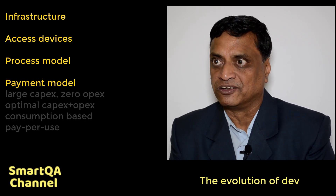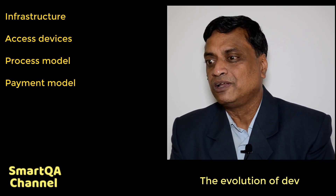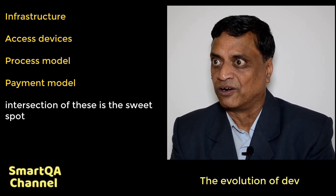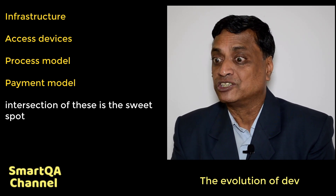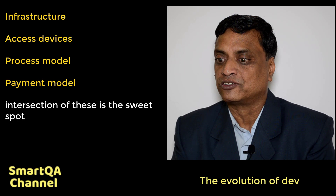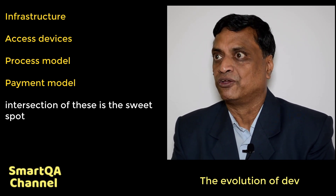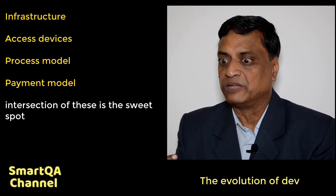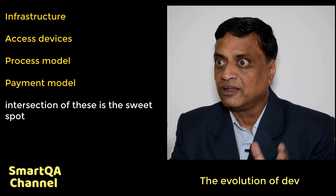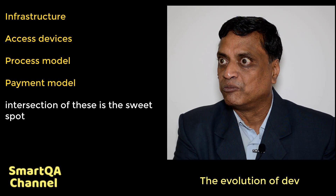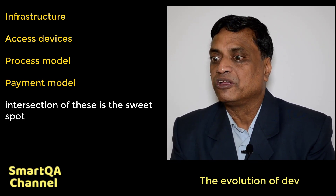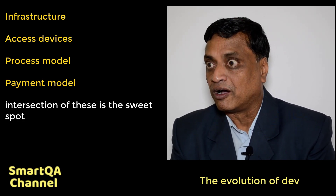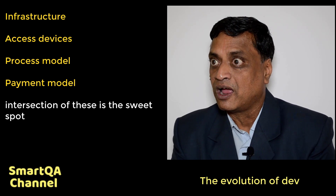So these are the four different dimensions in which the industry has evolved. The sweet spot is the intersection of all four — that's where all test engineers should work. If you see dimension one and dimension four, the infrastructure as well as the process delivery model, both of them are invented by the key engineers. Moving from the waterfall model to the V model was done by test engineers. Moving from individually kept machines to a test lab was initiated by testing teams. So the starting point of the majority of the evolution you see in the industry is testing.